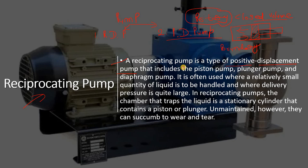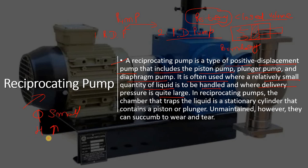A reciprocating pump is a type of positive displacement pump that includes a piston, plunger, or diaphragm — these are the heart of the reciprocating pump. It is mainly used where a relatively small quantity of liquid is to be handled and the delivery pressure is quite large, meaning small Q but high head.